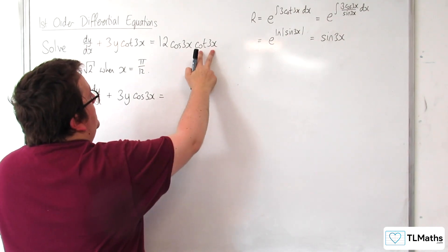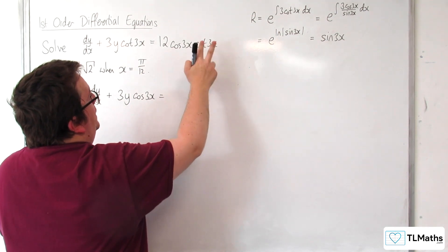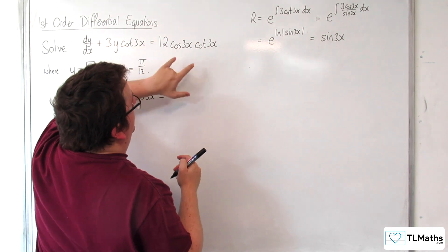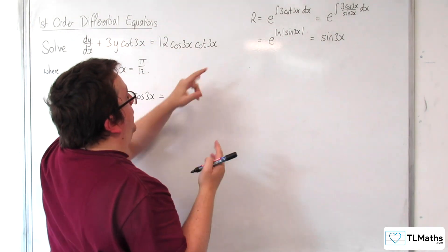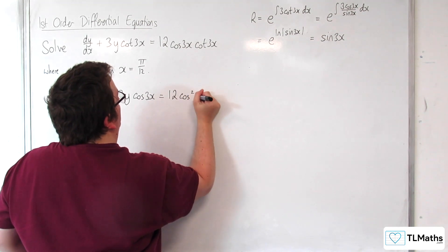And the same here. When we multiply this through by sine of 3x, this cot of 3x becomes cosine of 3x. And I've got cosine of 3x times cosine of 3x, so 12 cosine squared 3x.